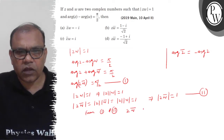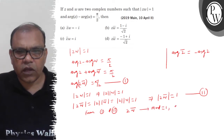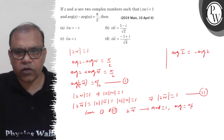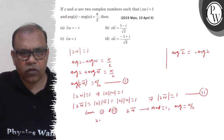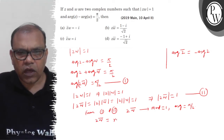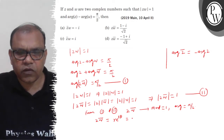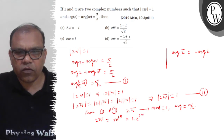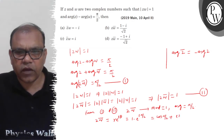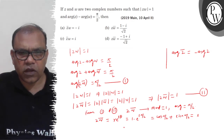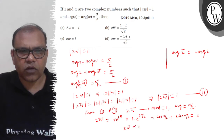So from results 1 and 2: z·omega-bar has modulus equal to 1 and argument equal to pi by 2. This means z·omega-bar equals r·e^(iθ), where r (the modulus) is 1 and theta (the argument) is pi by 2, giving e^(i·pi/2). So the result we get is z·omega-bar equals iota.